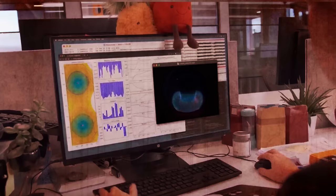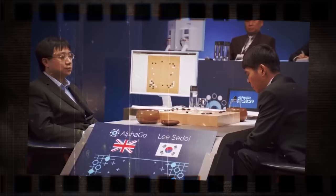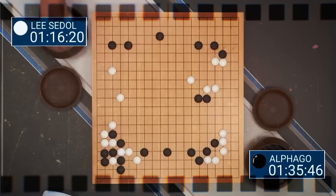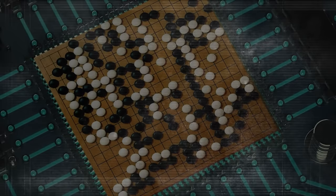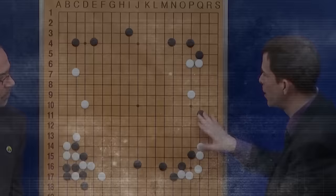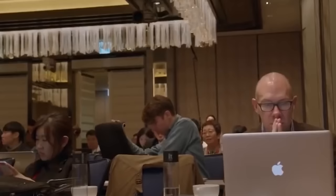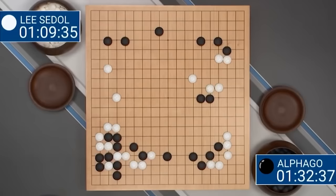One of the most famous projects of DeepMind is AlphaGo, an AI program that defeated a human champion at Go, a complex board game that requires intuition and creativity. Go is considered one of the hardest games for computers to play because it has more possible moves than atoms in the universe. Many experts thought that it would take decades for an AI to beat a human at Go, but DeepMind did it in 2016.